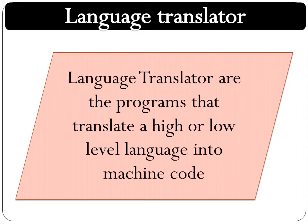In the previous lecture we discussed high level and low level languages. High level languages are near to human language and low level languages are far away from human language. High level languages are easy to understand; for example, BASIC, COBOL, FORTRAN, Java, etc. are examples of high level languages. Low level languages are difficult to understand; assembly language and machine language are examples of low level languages.